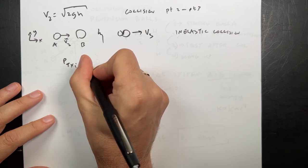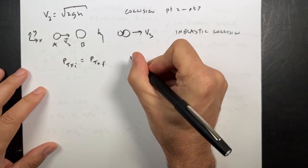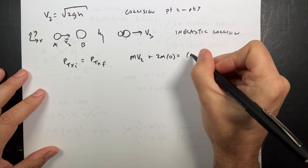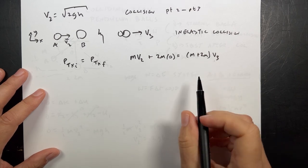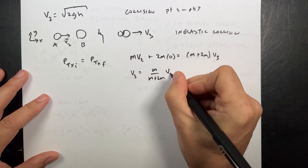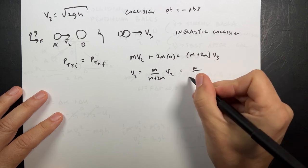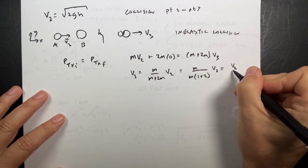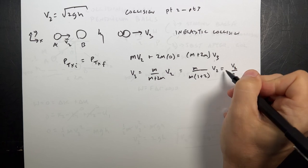Let's just say that momentum before in the X direction is equal to the momentum after. P total X initial is equal to P total X final. The mass of A, which is just M, times V2, plus the mass of B, 2M, times its velocity, 0, is equal to the sum of the masses, M plus 2M, times V3, which is the final velocity. And I want to find V3. That's pretty easy. V3 equals M over M plus 2M times V2. I can write this as M over M times 1 plus 2 times V2. The mass is canceled, so I get V2 over 3. That's the velocity of the stuff afterwards. V3. That's V3.